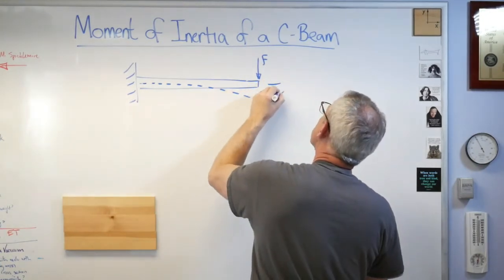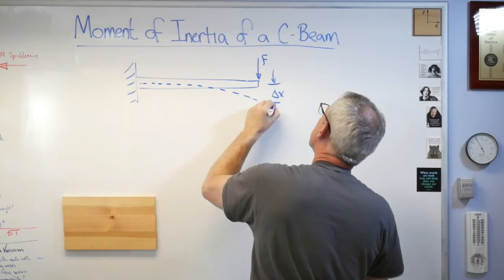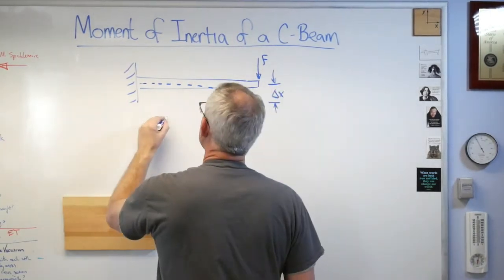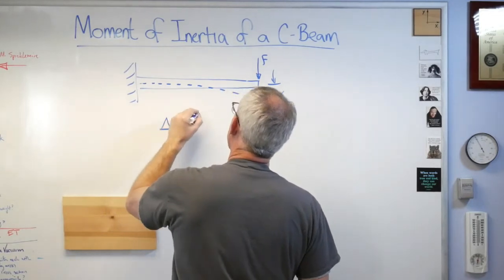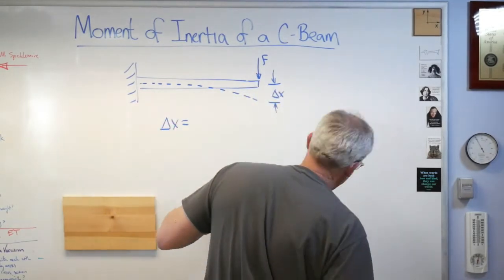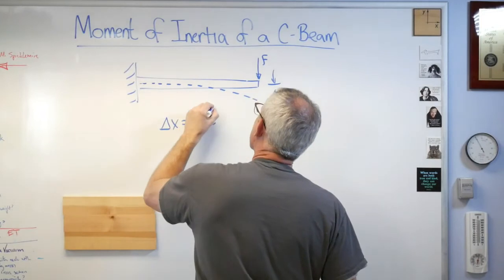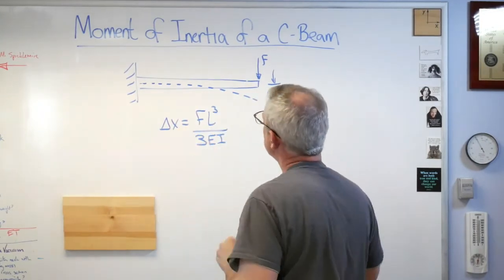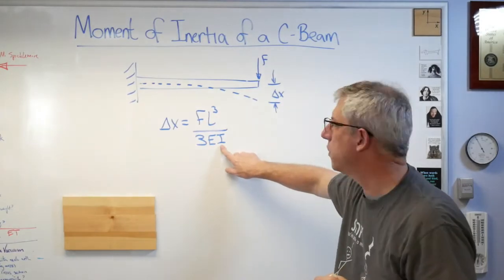Got a beam out here and I'll put a force out there. That could be anything. That could be a kid standing on the end of a diving board. Who knows what that is? But if you look at the centerline of the beam, the elastic axis, it'll move down like that. And that distance right there we'll call delta x. That expression is F L cubed over 3 E I. Well, there's I right there. That's your area moment of inertia.